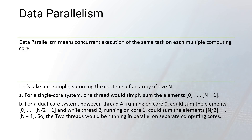What is data parallelism? Data parallelism is all about concurrent execution of the same task on each of multiple computing cores. For example, on a single core system, one thread would sum up the contents of an array of size n, starting from index zero and going till n minus one. This is for the single core system.